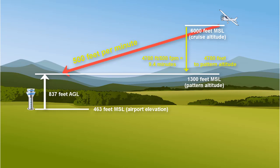Next we need to ask what our descending airspeed will be. We will use 100 knots in this example. To determine how many nautical miles we can fly per minute at that speed, we take 100 nautical miles and divide by 60 minutes, which gives us approximately 1.67 nautical miles per minute.